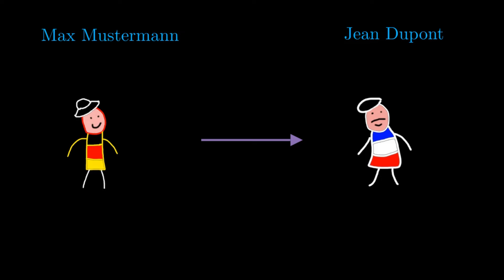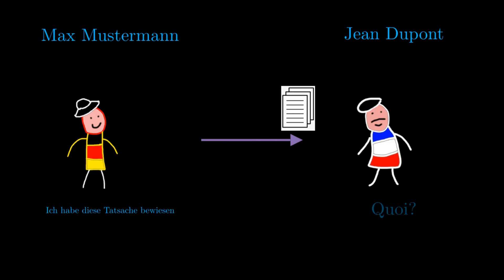This is the start of one of the various writings of Giuseppe Peano on the question of an international language, and from the start, we can immediately see how problematic the communication between scholars of different countries was at the time. I included this quote at the start of the video to better comprehend the struggle of scholars of the time.